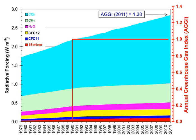Greenhouse gases are those that absorb and emit infrared radiation in the wavelength range emitted by Earth. In order, the most abundant greenhouse gases in Earth's atmosphere are water vapor, carbon dioxide, methane, nitrous oxide, ozone, chlorofluorocarbons (CFCs), and hydrofluorocarbons. Atmospheric concentrations are determined by the balance between sources and sinks — the removal of the gas from the atmosphere by conversion to a different chemical compound or absorption by bodies of water.